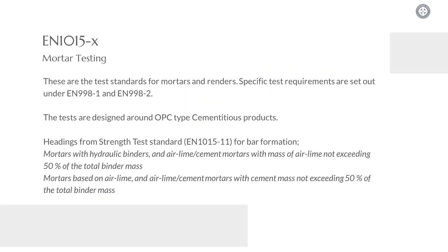Moving on to mortar testing: EN1015 is the suite of tests which are applicable to the specification standards for mortar and render, which are EN998 parts one and two. The EN1015 suite of tests are very explicitly designed around Portland cement type products. Any mortar with a hydraulic binder — and that is a very broad term — would be tested the same as a 1:1:6 or more cement-rich mortar. So even if we were to make and get classified a material which was an ultra-low strength material, it would be tested under the same methodology as a Portland cement mortar of 1:1:6 or stronger.